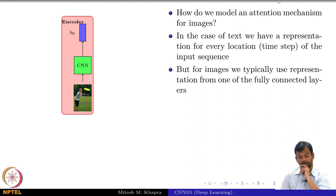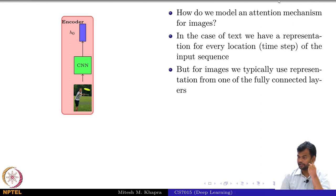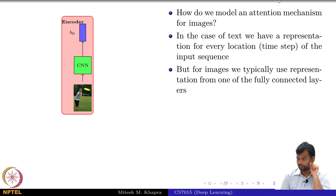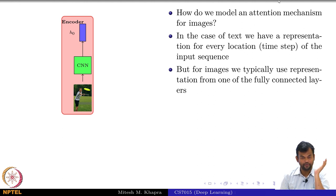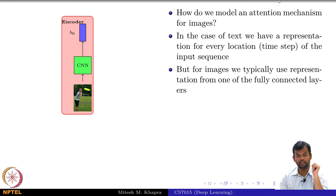For images we typically take the representation from a CNN — it could be FC7 or any of the convolution layers or max pooling layers. There is no concept of time step there because the entire image is given to you at one go. But the motivation is very clear. For example, for this figure, if I am trying to generate the description 'a man throwing a frisbee in a park or something like that.'